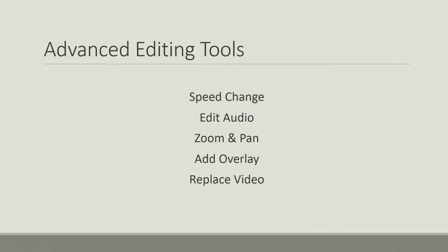Screencast-O-Matic gives us a handful of advanced editing tools. We can change the speed of our video, either by slowing it down or speeding it up. We can edit the audio by re-recording a portion of just the audio versus the video, or we can export our audio to a file and edit it in another application. We can also zoom and pan into a portion of our screen, add an overlay including arrows or a picture, and we can replace a video by re-recording a segment of it while not having to replace the audio, but replacing the video on the fly.